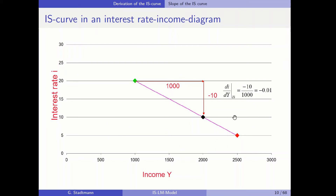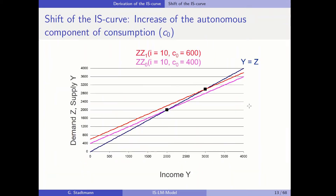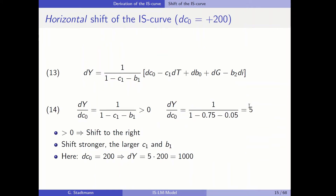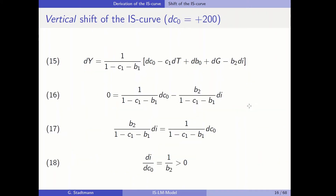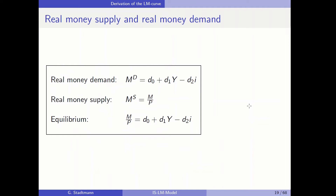The IS curve is a downward sloping curve in the interest rate-income diagram. We also talked about the slope of the IS curve, derived it formally, and discussed those changes which lead to a shift of the IS curve — both the horizontal and vertical shift of the IS relationship. Now we follow the same procedure with respect to the money market, the LM part.